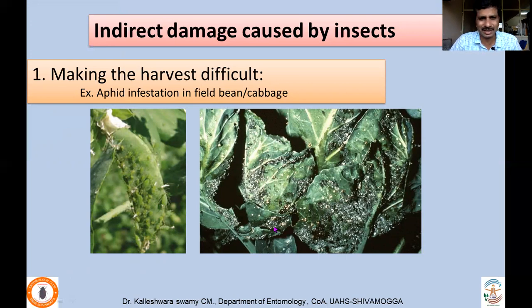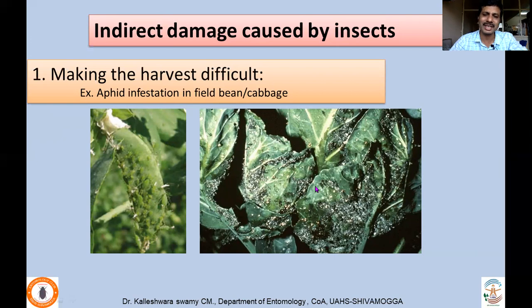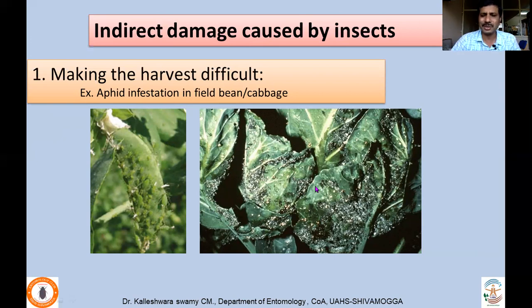Those are the direct damages insects cause. Indirectly, the mere presence of insects on various parts of the plant makes the product unsuitable for marketing and consumption, fetching very low prices in the market. For example, aphid infestation in field bean, or in cabbage where large numbers of aphids colonize plant parts and secrete honeydew that grows on the plant part — making the harvest very difficult, as you cannot wash each plant part to sell the produce.